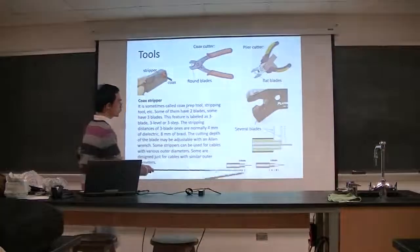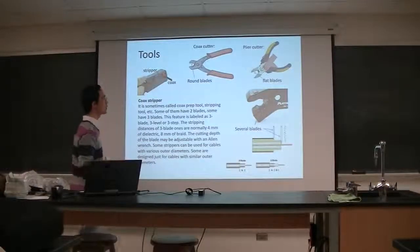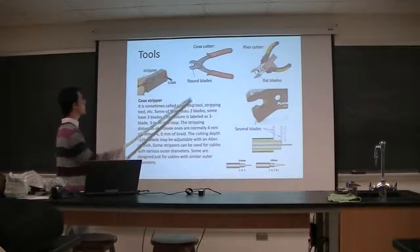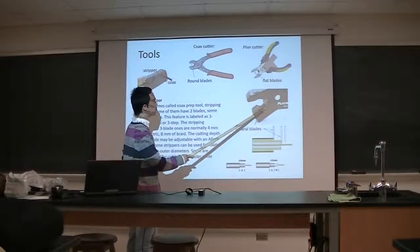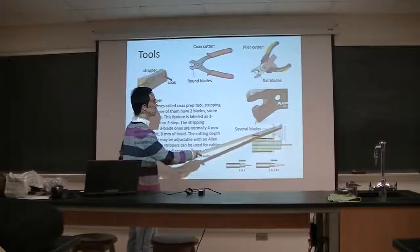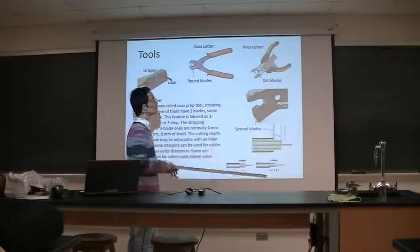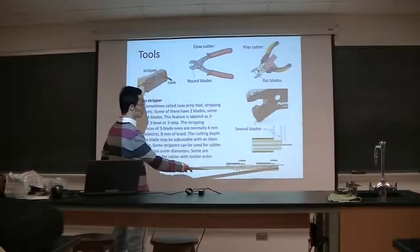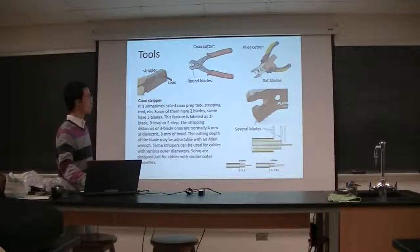And then you need to prepare your coaxial cable like this so that you can connect it to a connector. So you need a special tool for that. This is called a stripper, sometimes called prepare tools or stripping tools. Basically it has multi levels of blades. For example here I show you two levels of blades. They can cut into different depths of the cable. And the depth can be controlled by a screw in the stripper. And then you may have three blades or you may have two, depends on what kind of connector you want to use.